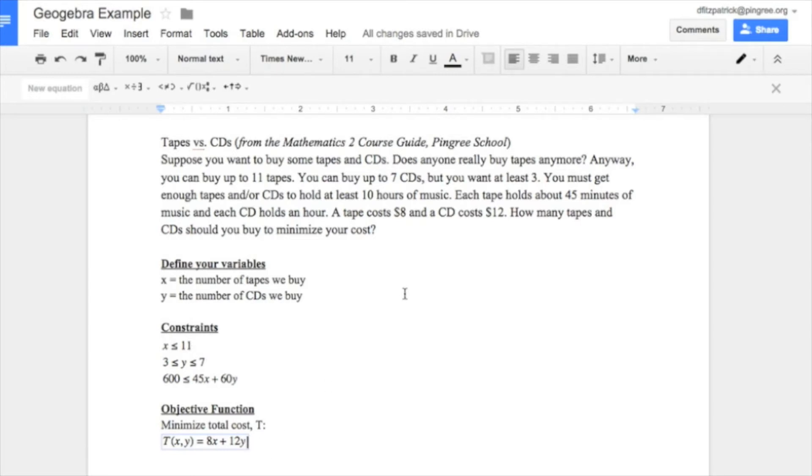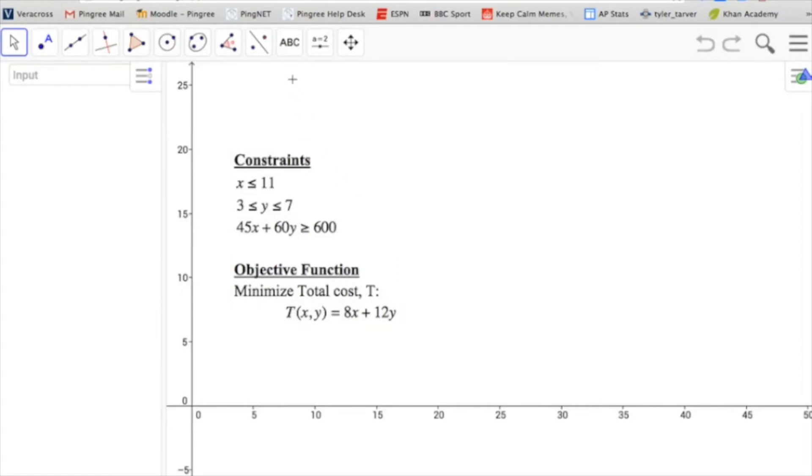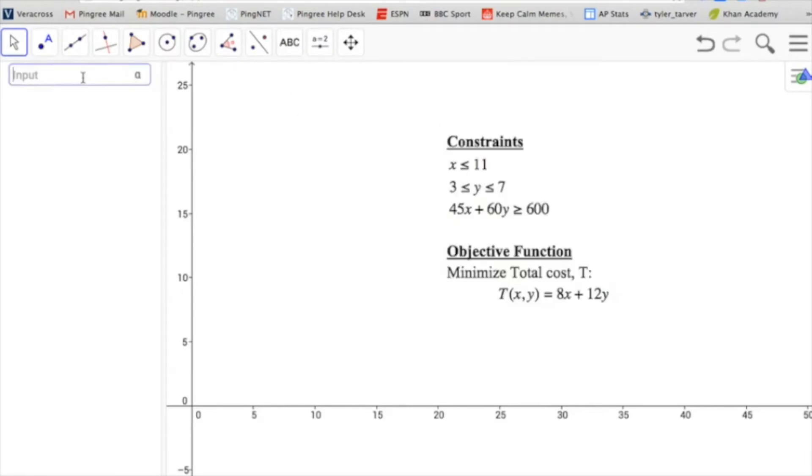Now we want to switch over to GeoGebra. So we go web.geogebra.org. We're going to start in the algebra section. So go into the algebra section. And now conveniently my constraints are here. So what I'm going to do first is I'm going to type my inequalities into the input bar on the left one by one.